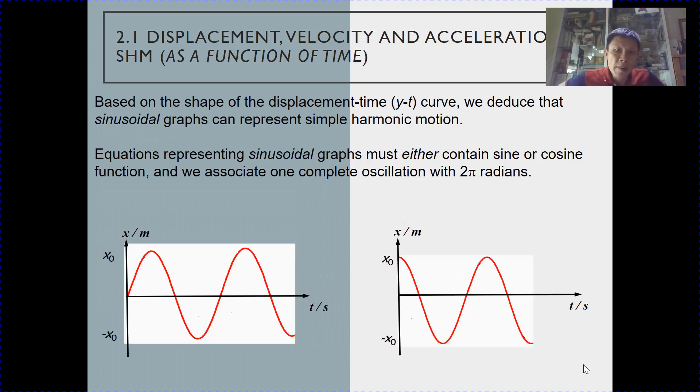For simple harmonic motion, it can either be sine or cosine. That will depend on the starting position. So for sine graph, if the timing starts at the center, then the displacement at time t equals zero will be zero. So it will be a sine graph.